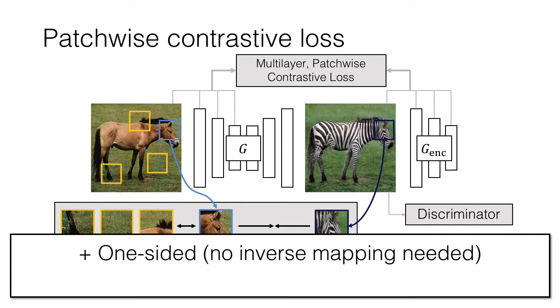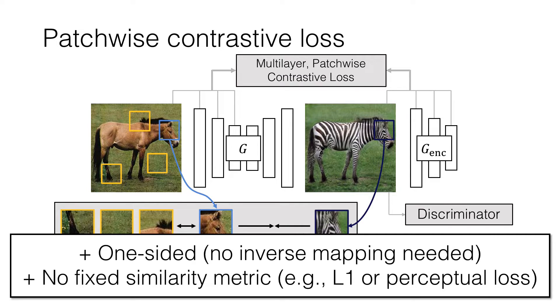Our method is one-sided and trains more than two times faster than CycleGAN. The method also learns cross-domain similarity in an emergent manner.